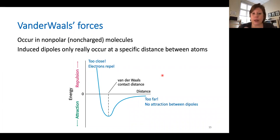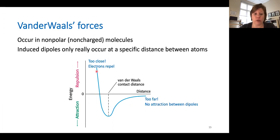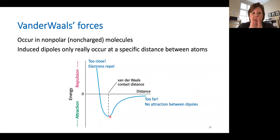These induced dipoles are really only going to happen at very specific distances between the atoms. If the molecules are too far apart, there's not going to be any attraction — they're too far to make a difference. As they come closer and closer together, there's going to be an increase in attraction between those induced dipoles. But as the molecules come too close together, the electron clouds can start to overlap and the electrons will repel one another. So the closer you get, you actually lose van der Waals interactions. These van der Waals interactions are due to really close physical distances, but it can't be sub-atomically close.